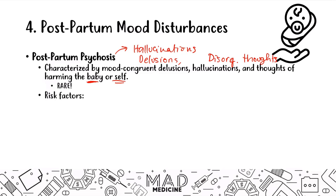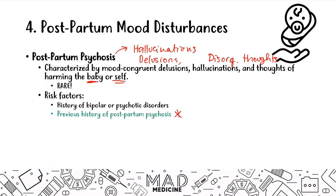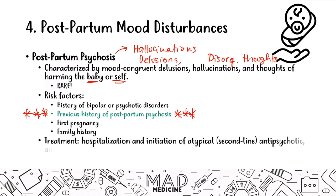This is rare but a psychiatric emergency. Risk factors include a history of bipolar or psychotic disorders, a previous history of postpartum psychosis — which is the most important indicator of recurrence — a first pregnancy, and a family history of postpartum psychosis. Treatment involves hospitalization and initiating atypical or second-generation antipsychotics, as discussed in the schizophrenia video. Antidepressants and mood stabilizers like lithium and valproic acid can also be used.